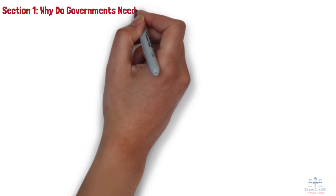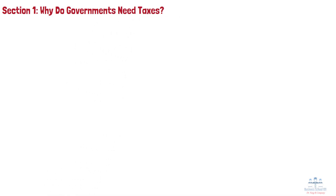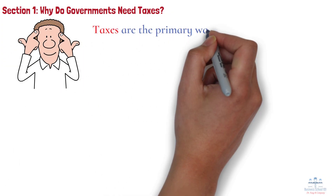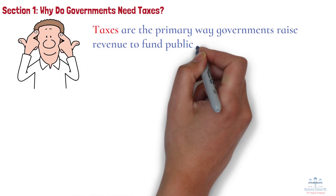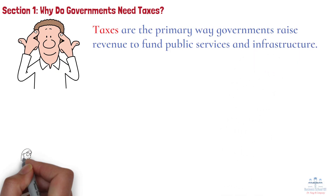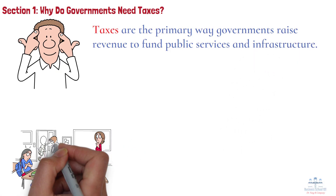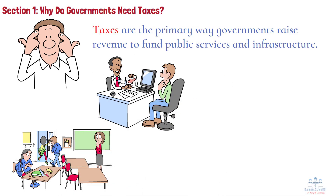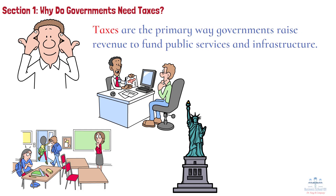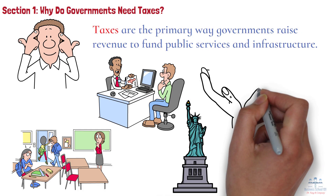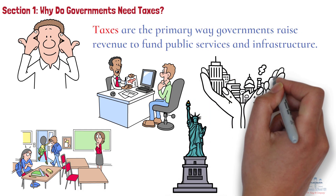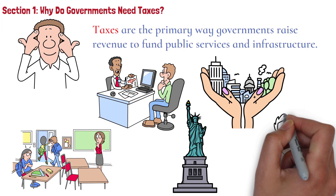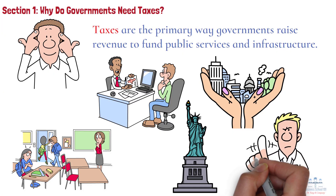Why do governments need taxes? Before we get into how tax rates are set, let's first understand why taxes are important. Taxes are the primary way governments raise revenue to fund public services and infrastructure. This includes everything from building roads and schools to providing social programs like unemployment benefits or healthcare. For example, think about a city like New York — it relies on taxes to fund public transportation, police, sanitation, and parks. Without taxes, many of the public goods and services that make a society function wouldn't be possible.